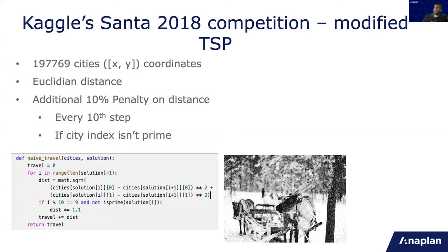So this is the problem we are going to solve or to optimize. It's Kaggle's competition, Kaggle Santa competition from 2018. And it is a modified traveling salesman problem. There are almost 200 cities. And the salesperson has to go through all the cities using the shortest distance. And the distance here is Euclidean, but there's a catch.